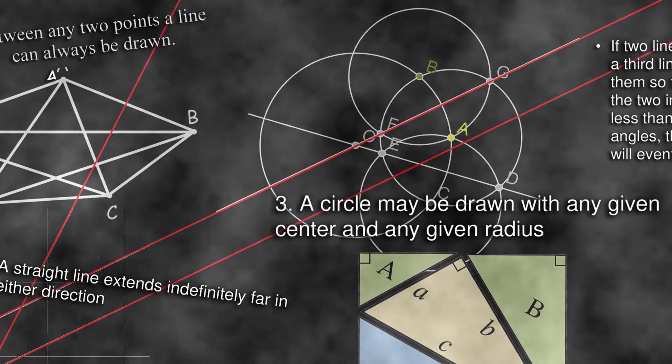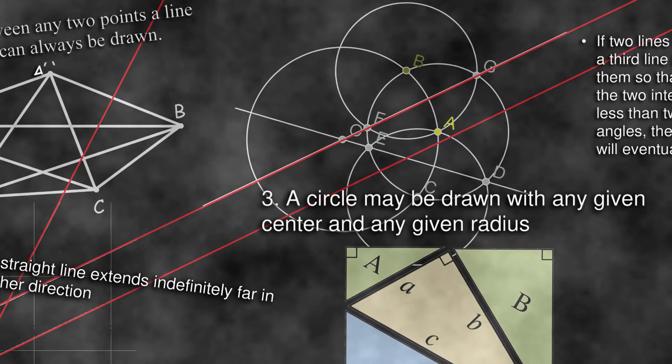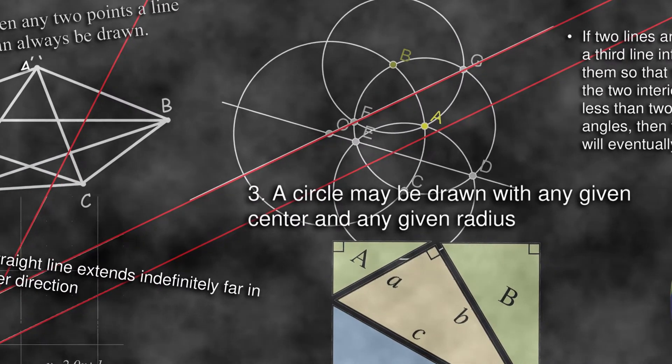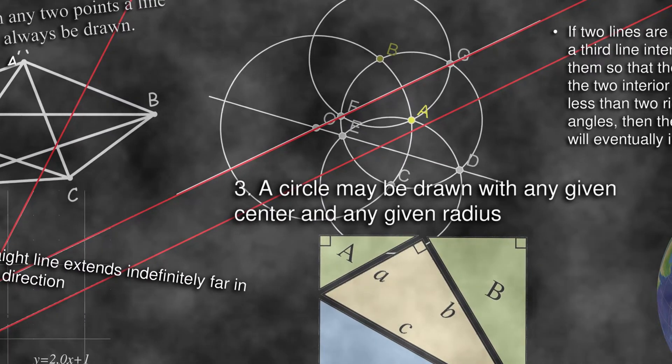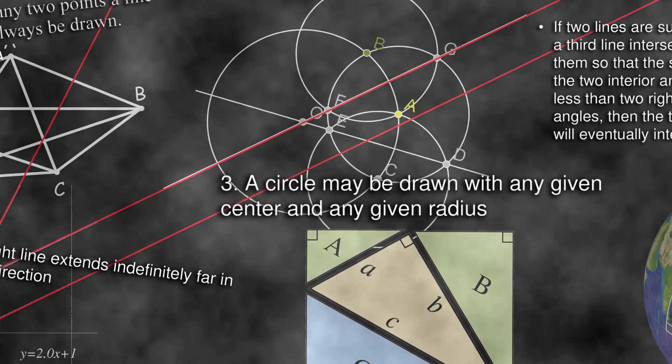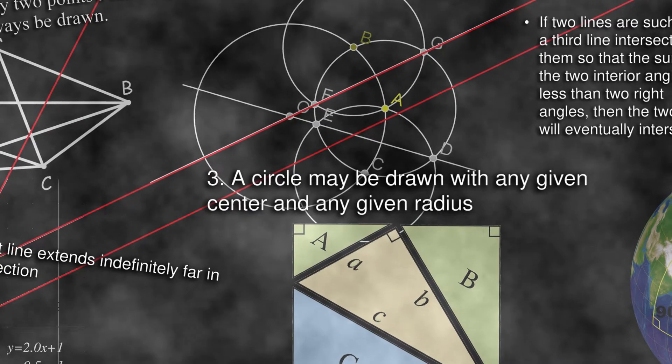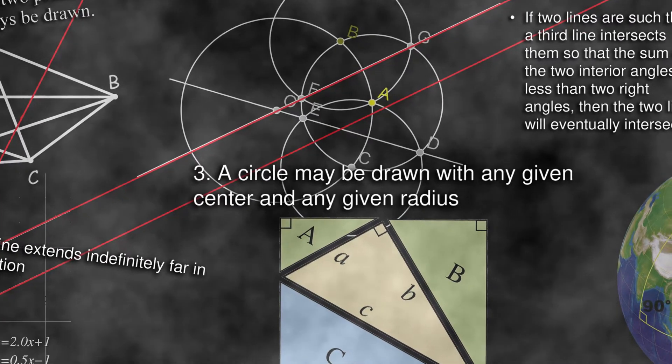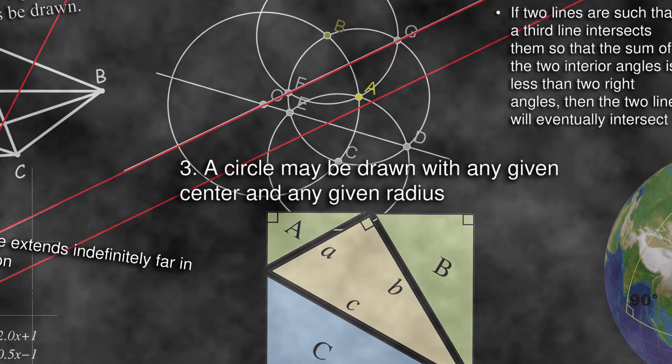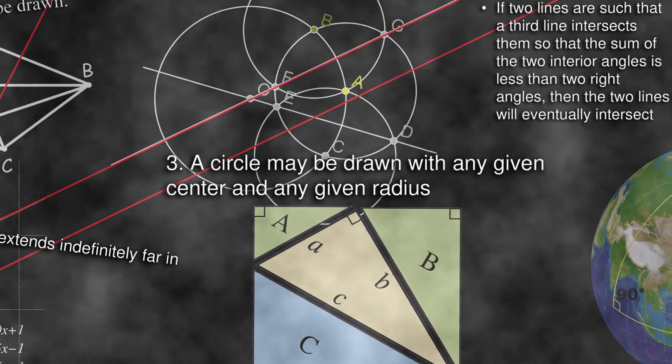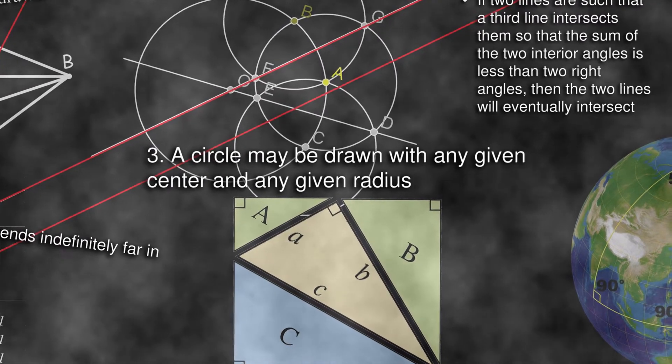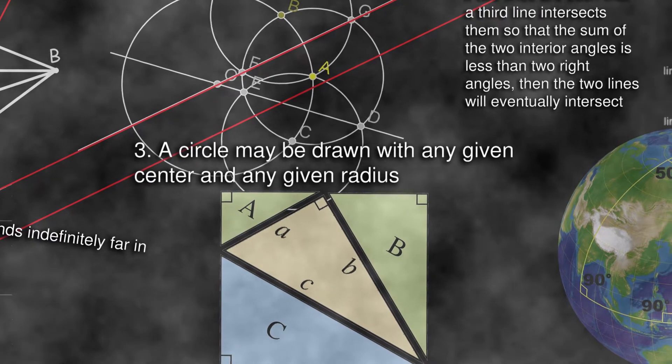With these watertight definitions, it was possible to establish firm proofs of otherwise vague hunches. The last of Euclid's axioms, if part of a line crosses two other lines so that the inner angles on the same side add up to exactly two right angles, then the two lines it crosses must be parallel, is called the parallel postulate.